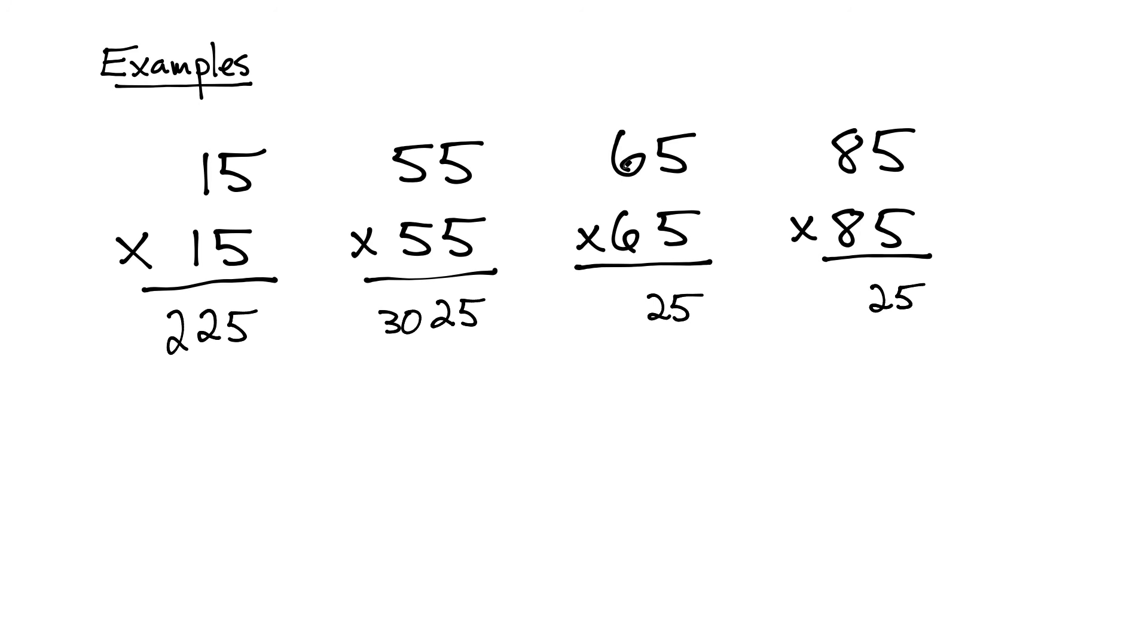Instead of multiplying 6 times 6, you add 1 to the top number, you're going to get 4225.